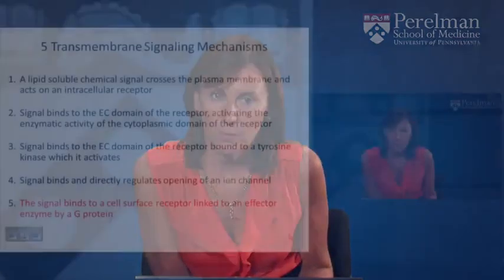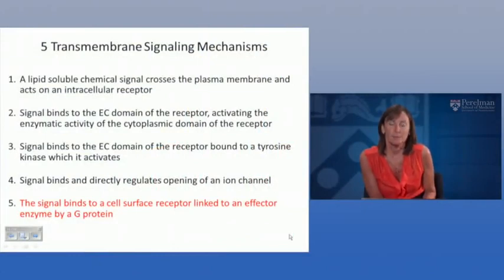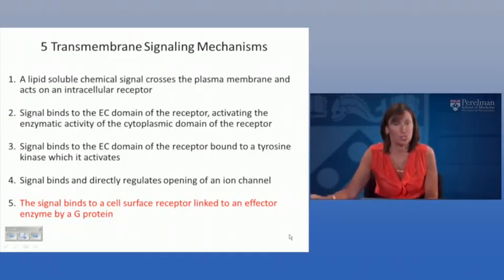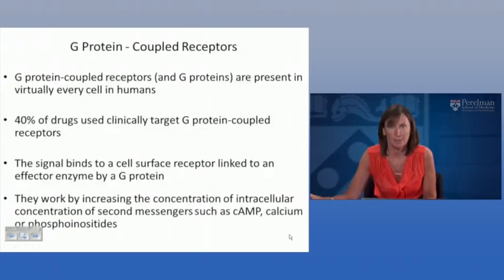Hello. Today we're going to pick up from where we left off in our discussion of different types of receptors and signaling pathways. We're going to spend today's class talking about G-coupled protein receptors. We will start with this first slide summarizing the sequence for G-protein-coupled receptors. In this example, a signal binds to a cell surface receptor linked to an effector enzyme by a G-protein, thus getting the name G-protein-coupled receptors.